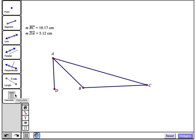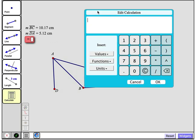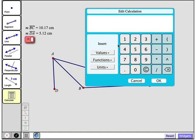I'll tap the calculate tool and I'll tap inside this rectangle and that brings up my calculator. Now to compute the area, if this was a normal calculator, I would type these values into the calculator, but if I type the values in, that's not a very powerful technique because if I drag a vertex of my triangle, these measurements are going to update, but my calculation won't. So that's not very helpful.